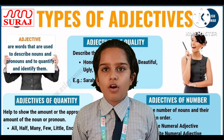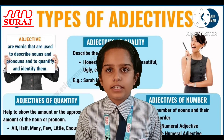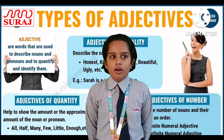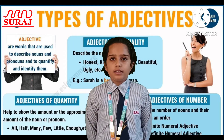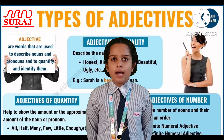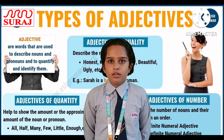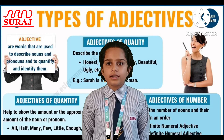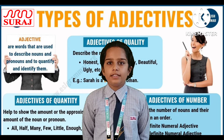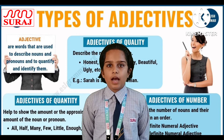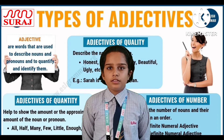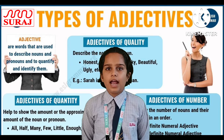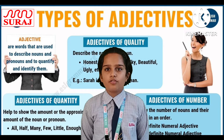Second, adjective of quantity. Adjective of quantity tells us how much of a thing is meant. Example: I ate some ice cream — 'some' is the adjective of quantity. Second example: she did not eat any rice — 'any' is the adjective of quantity.